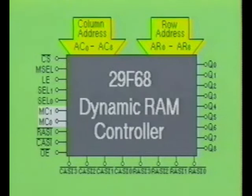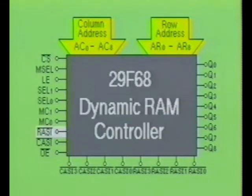Inputs MC0 and MC1 are the memory cycle inputs. These inputs are used to control the operating mode of the IC. The next input is labeled NOT RASI, which is the row address strobe input.